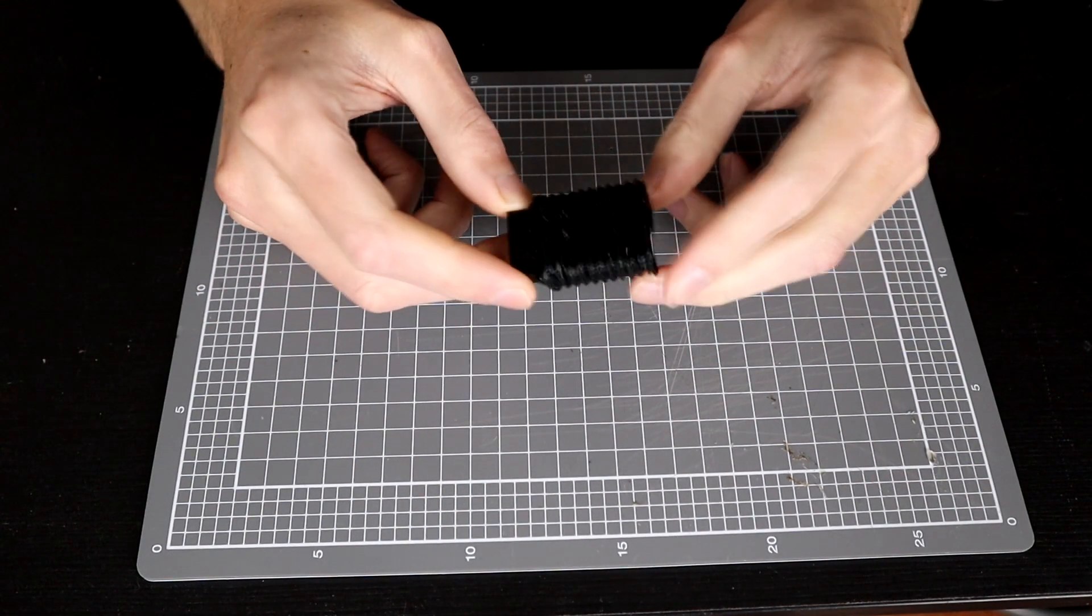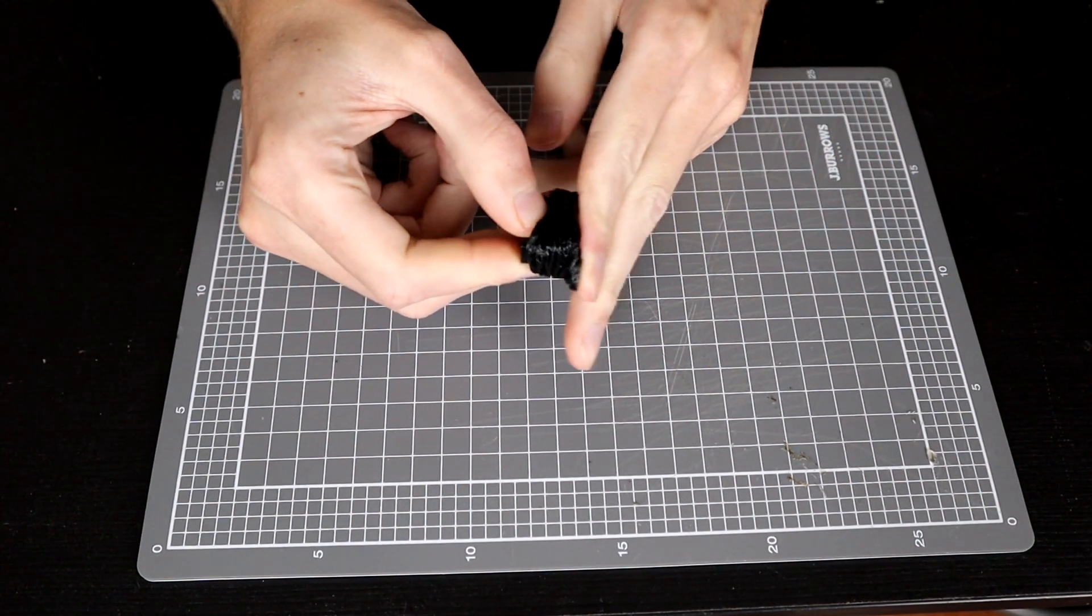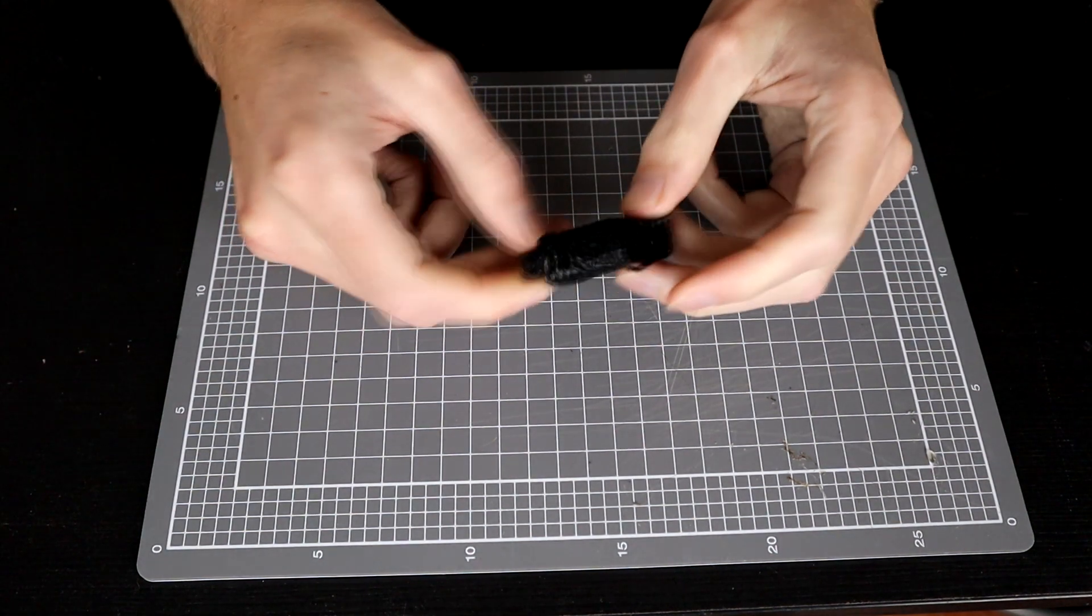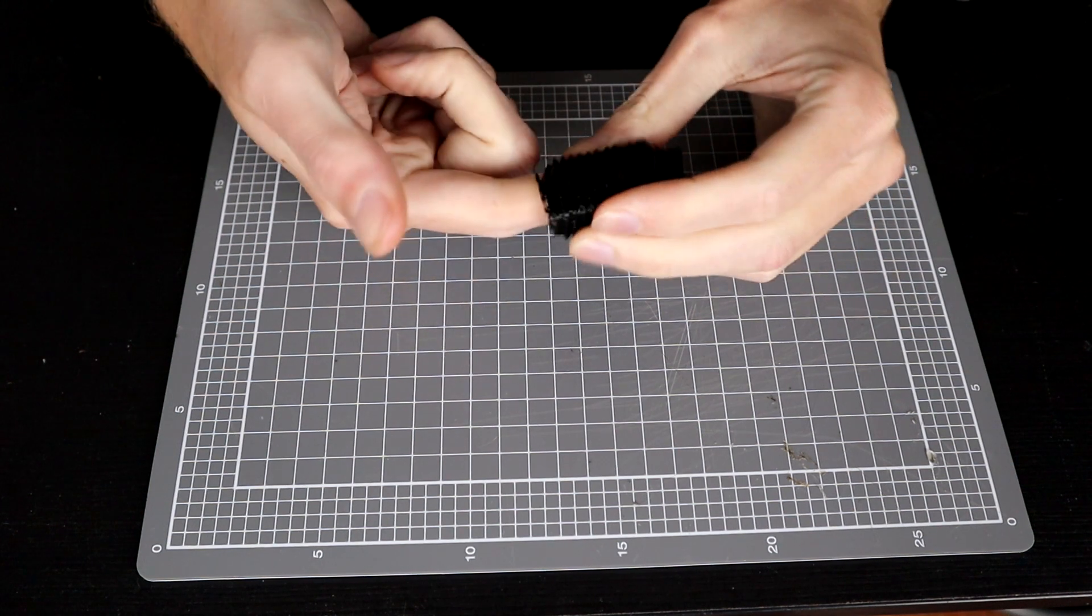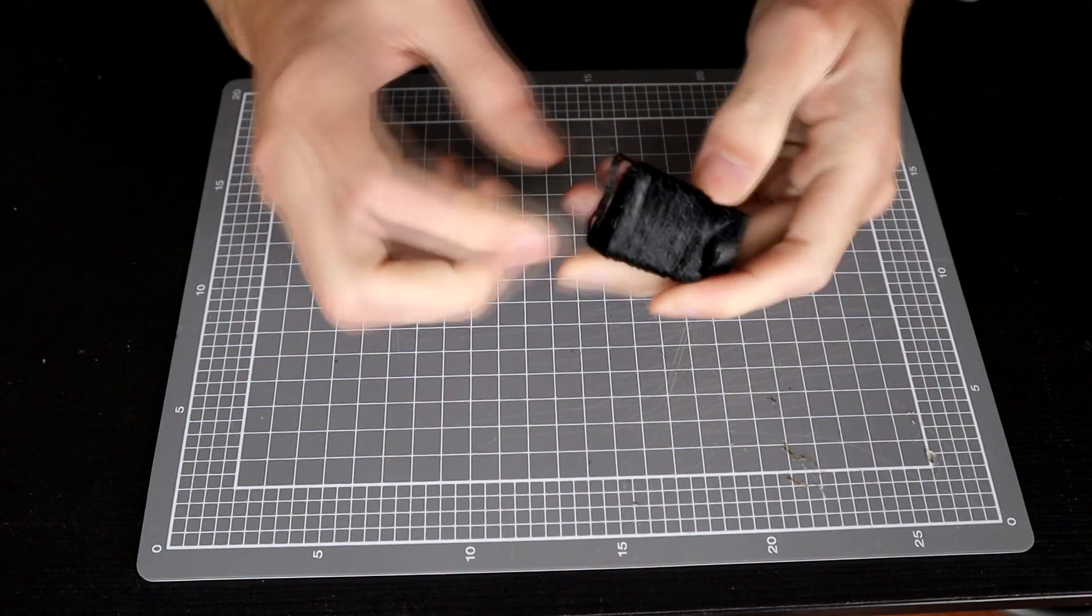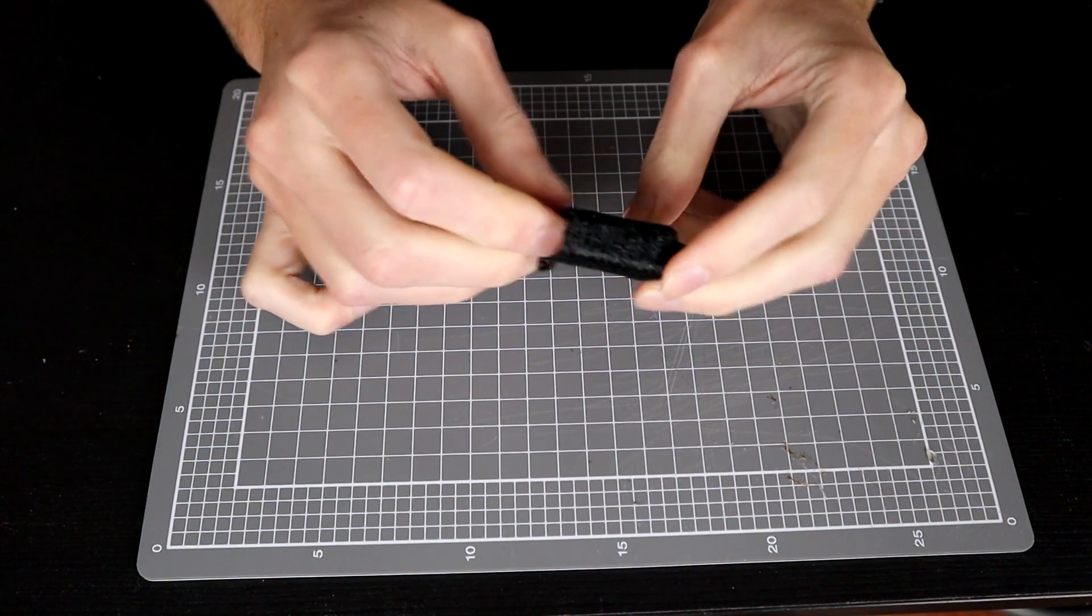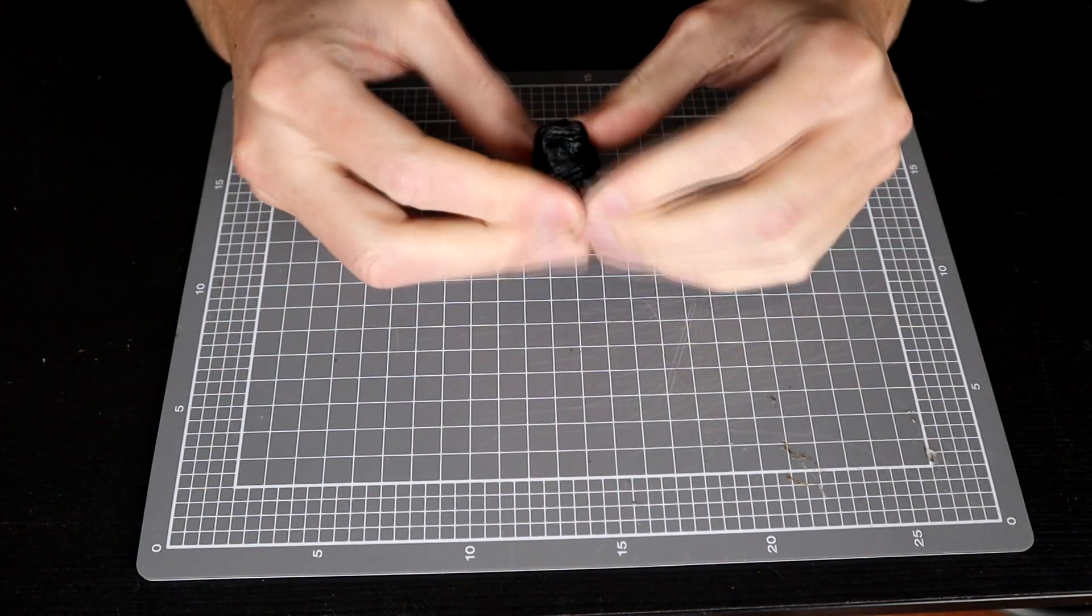So to start with, I tried a standard bellows style print with a single wall of TPU. But as you can see, this thing is falling apart and has holes in it and just the base didn't print. Like there is a lot wrong with this particular one.